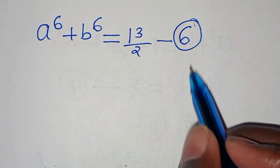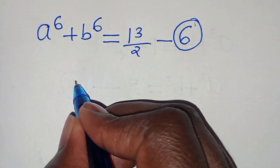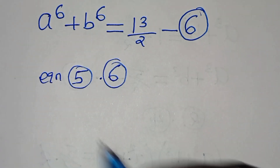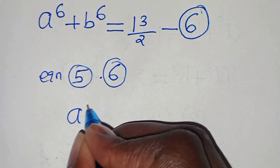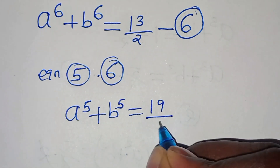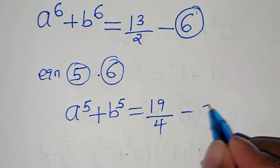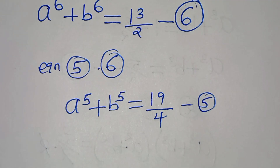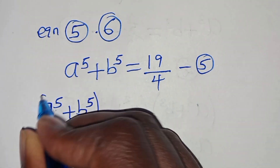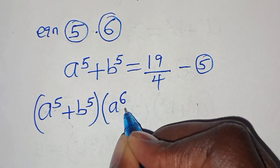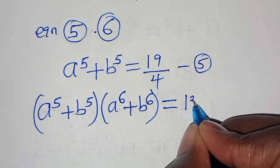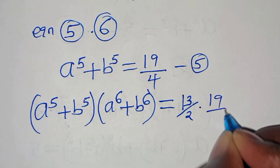The next step is to multiply equation five with equation six. Equation five is a to the fifth plus b to the fifth equals nineteen over four, and equation six is a to the sixth plus b to the sixth equals thirteen over two. So we multiply equation five by equation six: a to the fifth plus b to the fifth, multiplied by a to the sixth plus b to the sixth, equals thirteen over two times nineteen over four.